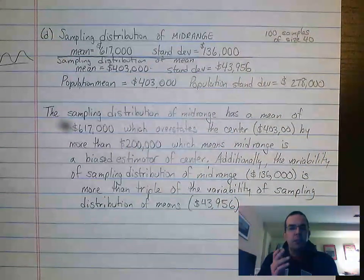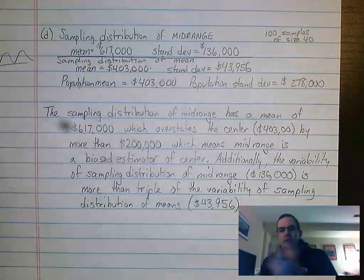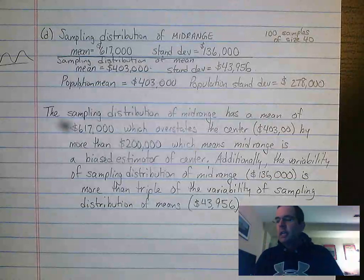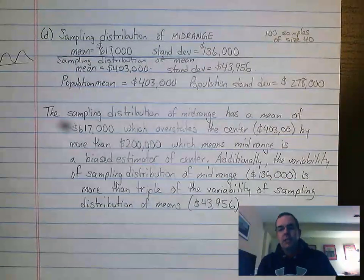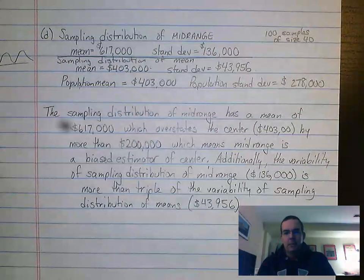And the question asked, what is a statistical advantage if we were to use the mean over the mid-range? So it kind of turns the question around from part C.